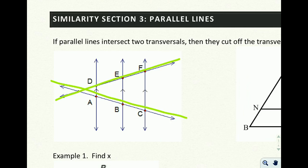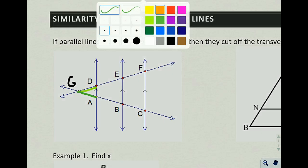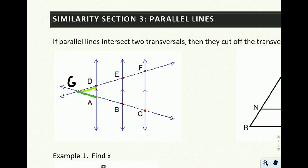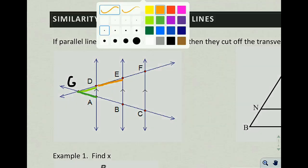Transversals are just lines that cut across parallel lines. And what it's telling us is that if we look at this little segment here, I'm actually going to go ahead and label this last point G on the end. So if we cut across from G to D, and we cut across from G to A,